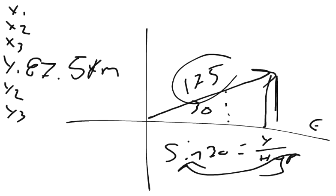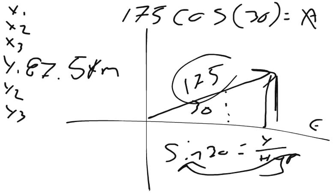And so now I can take cosine, so I'm going to take 175 times cosine of 30 degrees, and it should equal my adjacent, or my x value, x1. And that is 151.55. So I've got x1, I've got y1.